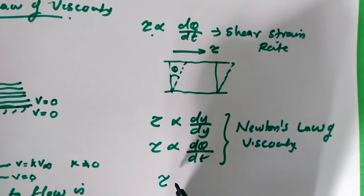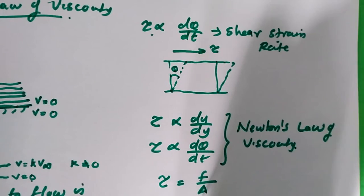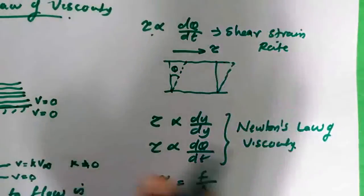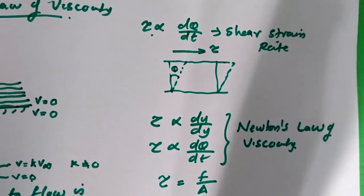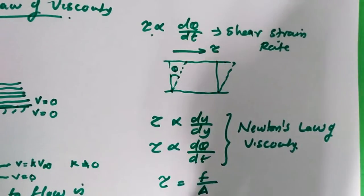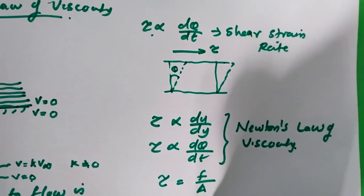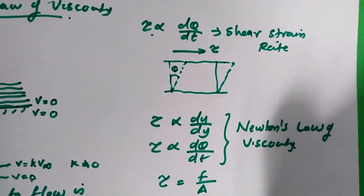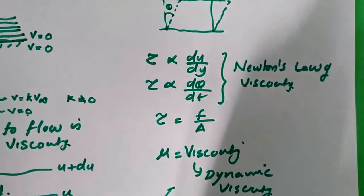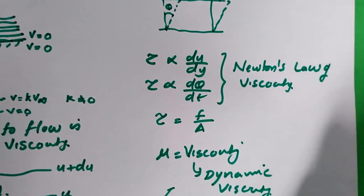Shear stress is force per area. These formulas will be very useful in solving problems. In this video, we covered Newton's law of viscosity: shear stress is directly proportional to shear strain rate, or directly proportional to velocity gradient. We introduced the constant mu, called dynamic viscosity. We will be covering dynamic viscosity and kinematic viscosity in coming lectures.